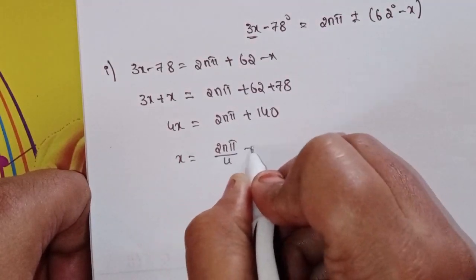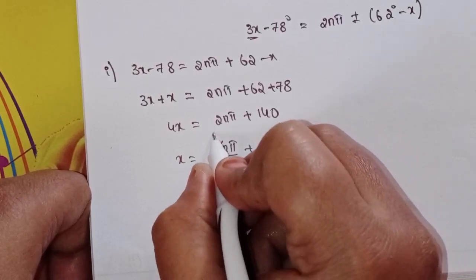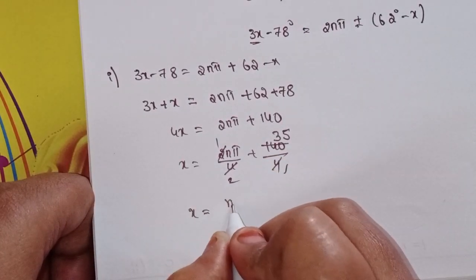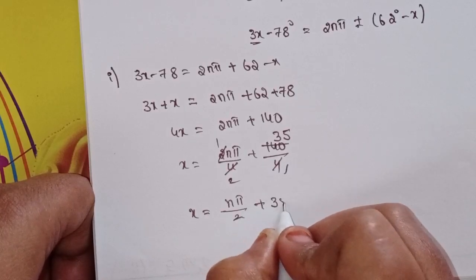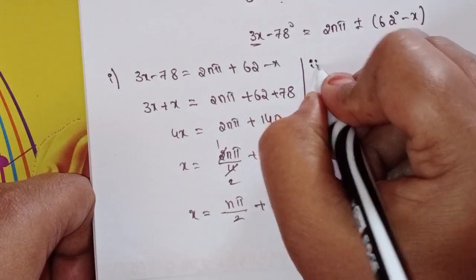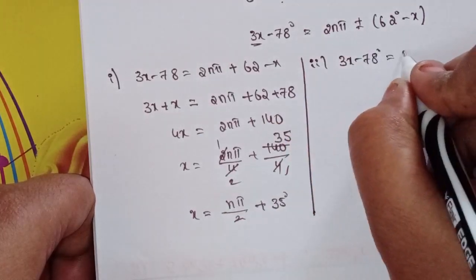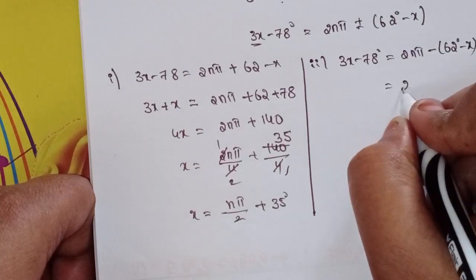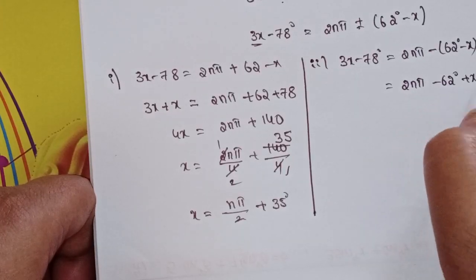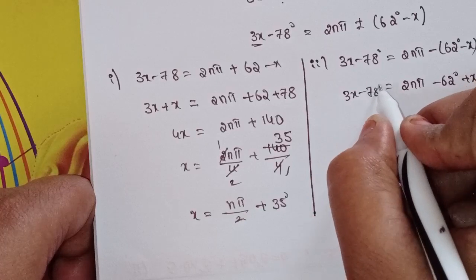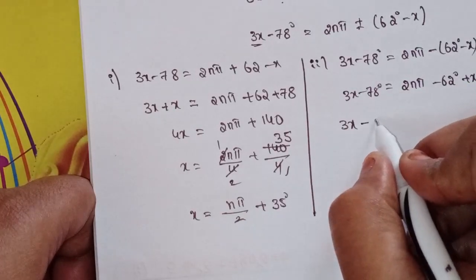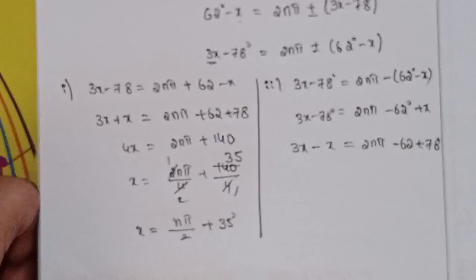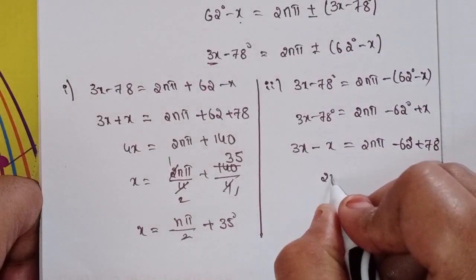Therefore x = nπ/2 + 35°. Case 2: 3x - 78° = 2nπ - (62° - x), which gives 3x - 78° = 2nπ - 62° + x. Rearranging: 3x - x = 2nπ - 62° + 78°, so 2x = 2nπ + 16°.